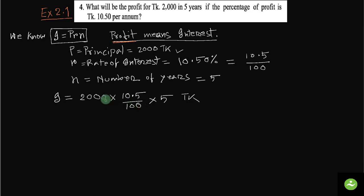If we simplify, two zeros cancel out. Now what we get is 20 into 5, which is 100, into 10.5. This equals to 1050 Taka.